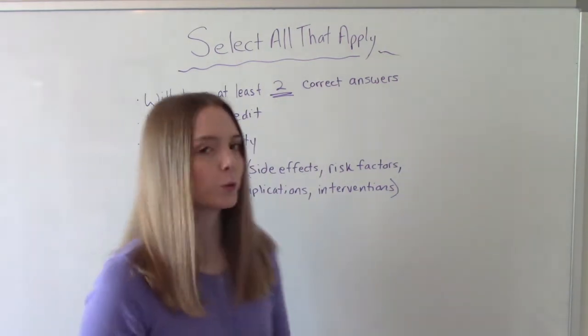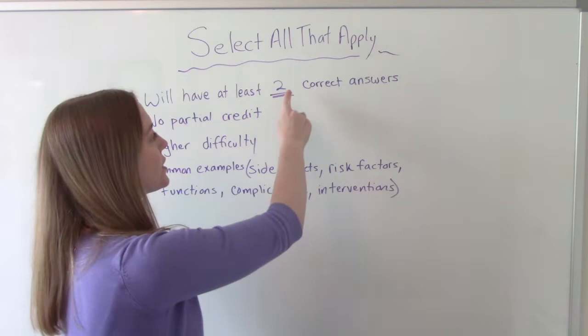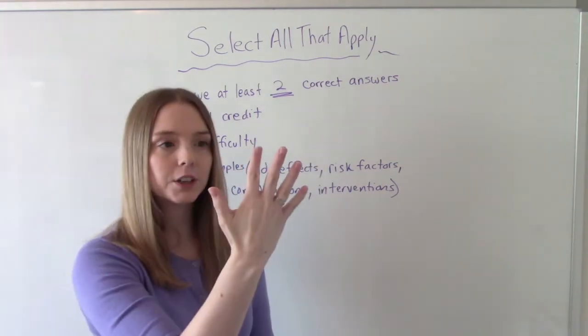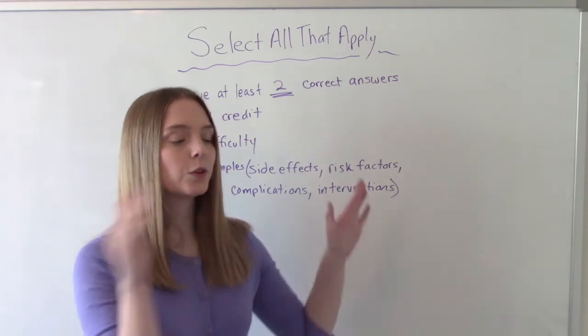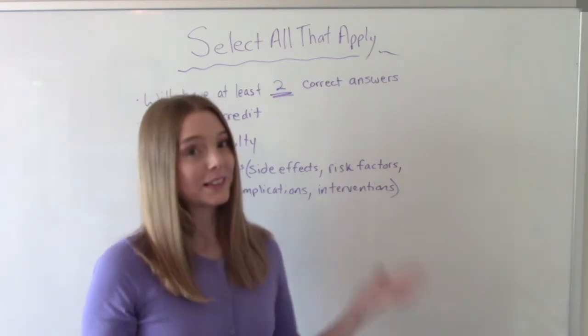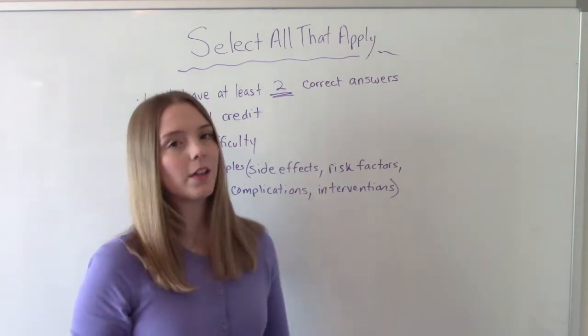And actually, that's the first rule to know. They will always have at least two correct answers. So if they give you five options, at least two of those are going to be correct. So if you read through it and you find one correct answer and then the rest aren't, you're missing one, right? Because there has to be at least two or else it wouldn't be a select all that apply.